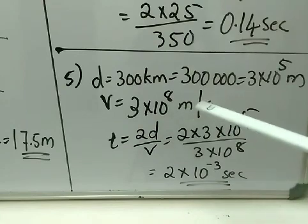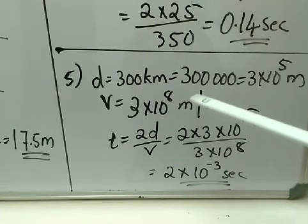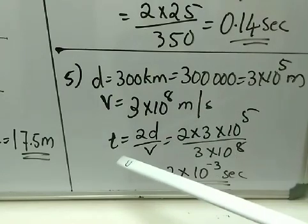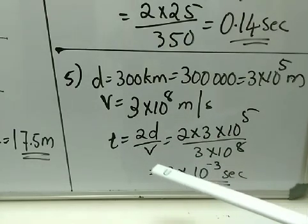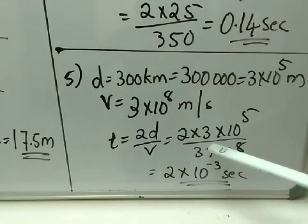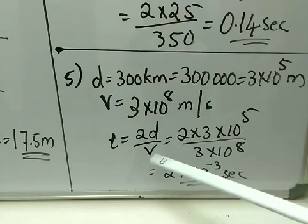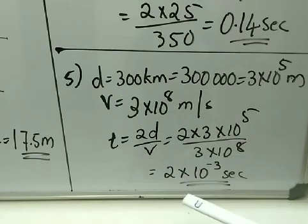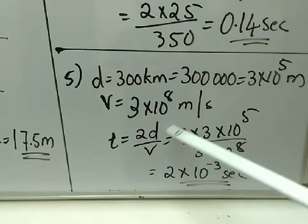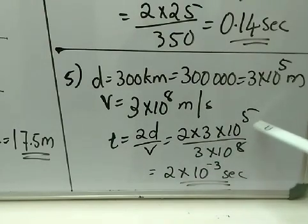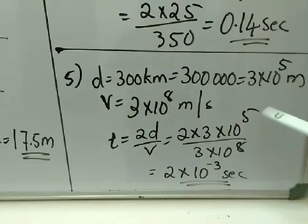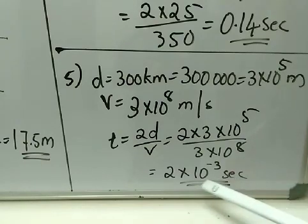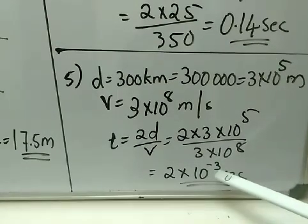Using V = 2D/T, T = 2D/V = 2 × (3 × 10⁵) / (3 × 10⁸). The 3s cancel, leaving 2 × 10⁵/10⁸ = 2 × 10^(5−8) = 2 × 10⁻³ seconds.